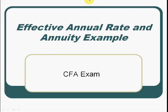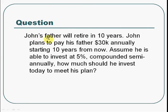Now we will go through an example to study the effective annual rate and annuity concepts. This is for the CFA exam. The question is: John's father will retire in 10 years. John plans to pay his father $30,000 annually starting 10 years from now. Assume he is able to invest at 5% compounded semi-annually. How much should he invest today in order to meet his plan?